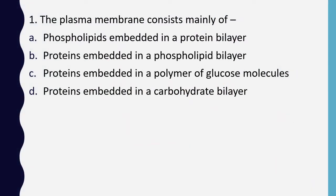Question 1. The plasma membrane consists mainly of: phospholipid embedded in the protein bilayer, proteins embedded in phospholipid bilayer, proteins embedded in polymer of glucose molecules, or proteins embedded in carbohydrates bilayer. Correct answer is option B: proteins embedded in phospholipid bilayer.